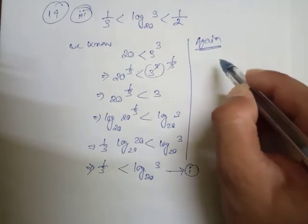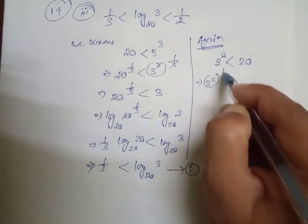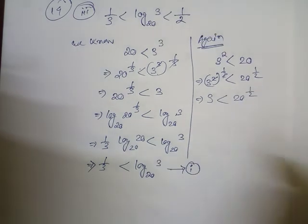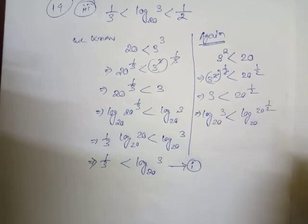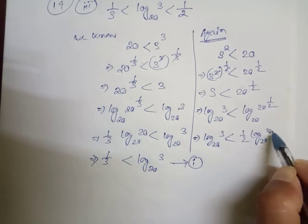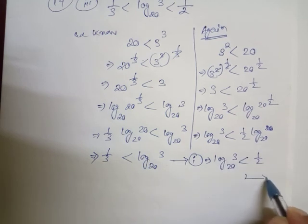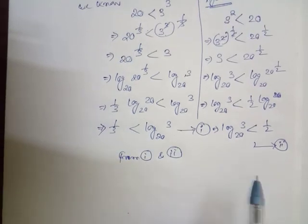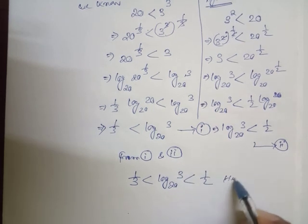Next, 3 squared is 9, and 9 is less than 20, obviously. Multiplying the power by 1/2 to free the 3, we get 3 < 20 to the power 1/2. Taking log base 20 on both sides: log base 20 of 3 < 1/2 times log base 20 of 20, and since log base 20 of 20 equals 1, we get log base 20 of 3 < 1/2. This is equation (2). From equations (1) and (2): 1/3 < log base 20 of 3 < 1/2. Hence proved.